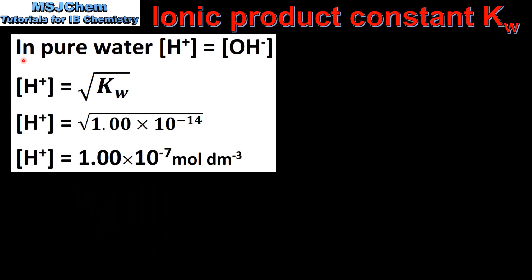Next we look at an example where we will calculate the pH of pure water at 298 K. In pure water, the concentration of the hydrogen ions is equal to the concentration of the hydroxide ions. Therefore, if we want to know the concentration of the hydrogen ions, it's equal to the square root of Kw. So the concentration of the hydrogen ions equals the square root of 1.00 times 10 to the negative 14, which gives us a concentration of 1.00 times 10 to the negative 7 moles per decimeter cubed.